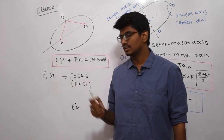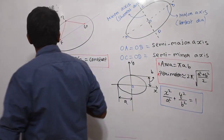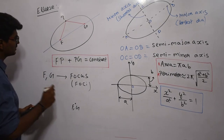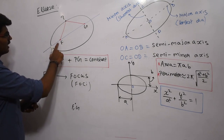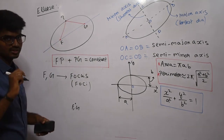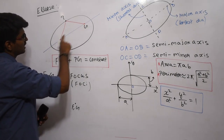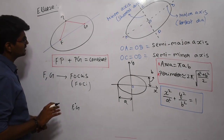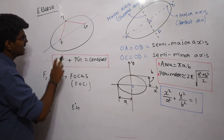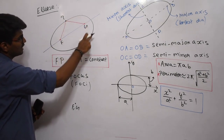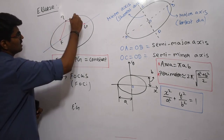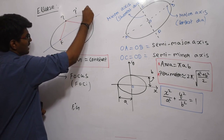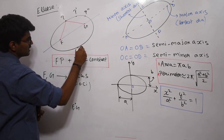Our next shape to discuss is ellipse. Ellipse is a simple shape. The definition of the ellipse is very simple: it is a curve similar to a circle but with two special points called focus, and combined they are called foci. These two points are fixed. For any point P I take on the curve — P dash, P double dash, or P triple dash — the sum of distances to the two foci remains constant.